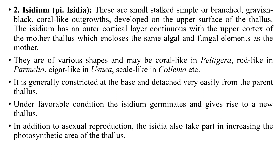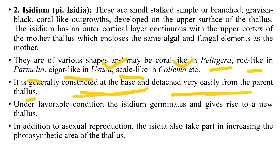Isidia are grayish-black, coral-like outgrowths present on the upper surface of the thallus. The isidium has an outer cortical layer continuous with the upper cortex of the mother thallus enclosing some algal and fungal components. They are of various shapes: coral-like in Peltigera, rod-like in Parmelia, cigar-like in Usnea, and scale-like in Collema. They are generally constricted at the base, detach easily under unfavorable conditions, and germinate to give rise to new thalli.